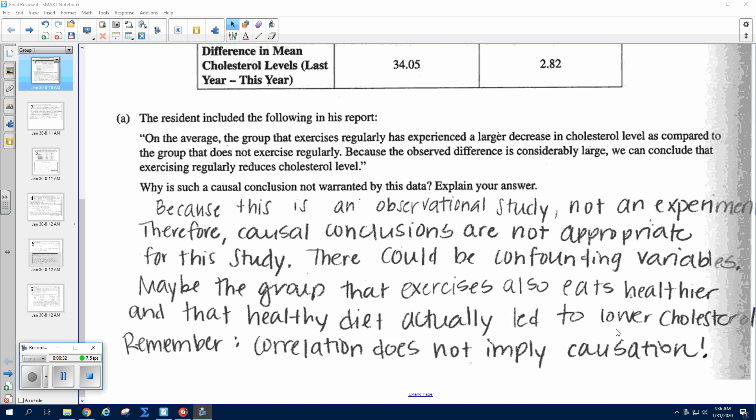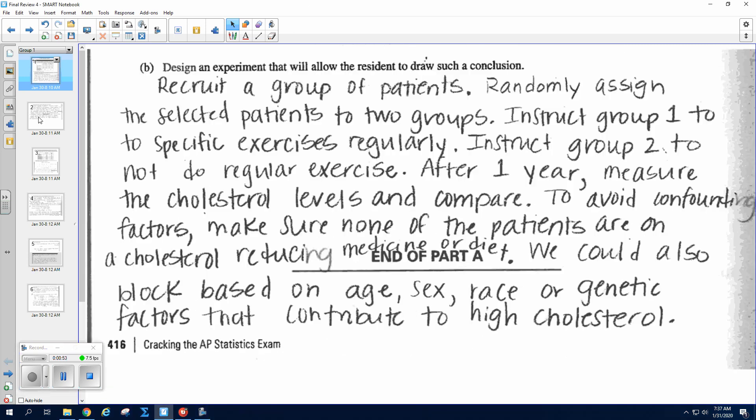So if you don't have cause and effect, then there could be confounding variables. For example, maybe the group that exercises also eats healthier, and it's really the healthy diet that leads to lower cholesterol. So just a reminder that correlation does not imply causation.